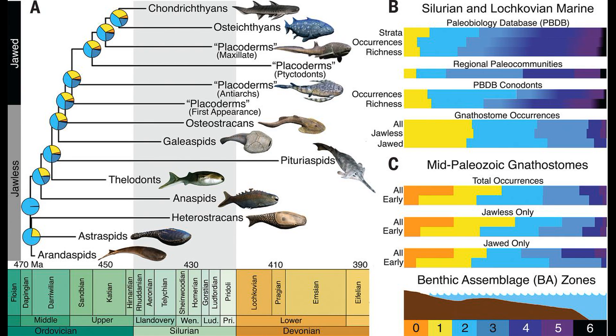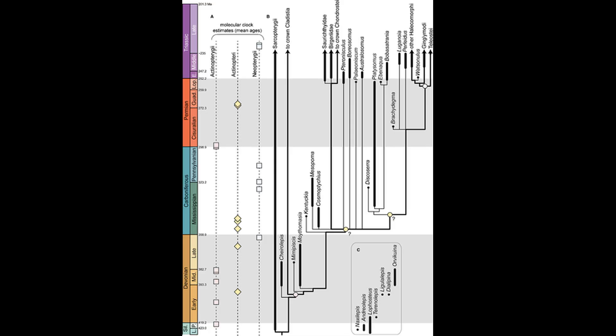In their paper published in Science from 2018, Sallan et al. discussed this very issue in regards to all vertebrate groups. They conclude that all ancient vertebrate groups, including the Osteichthyes, originated from shallow nearshore environments such as reefs, lagoons, and intertidal zones, and that freshwater environments were invaded repeatedly.